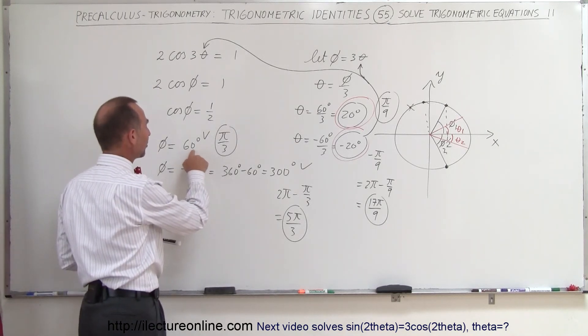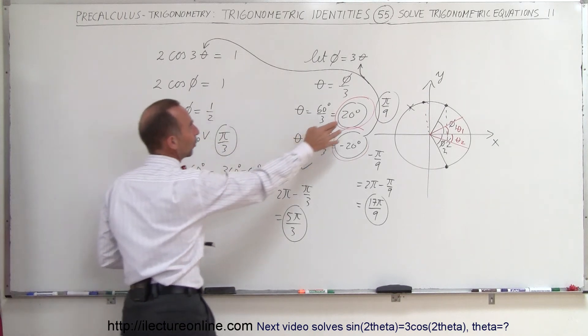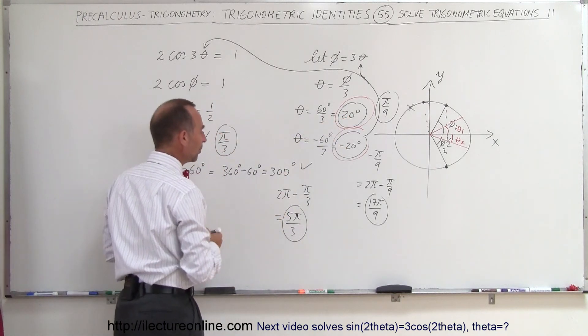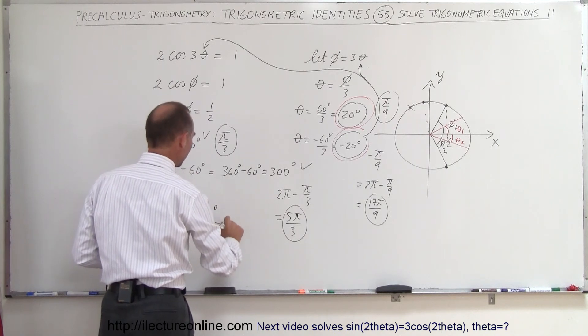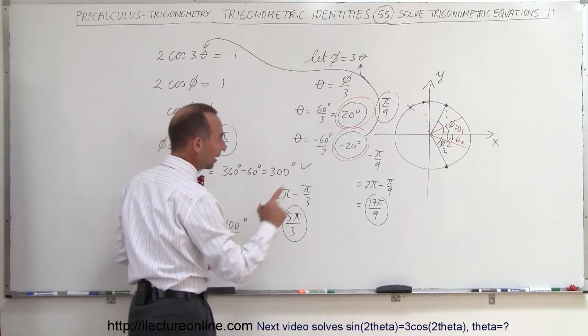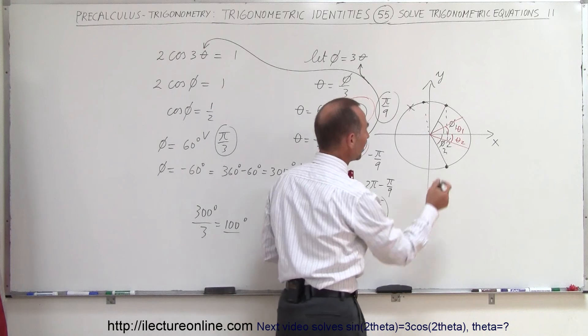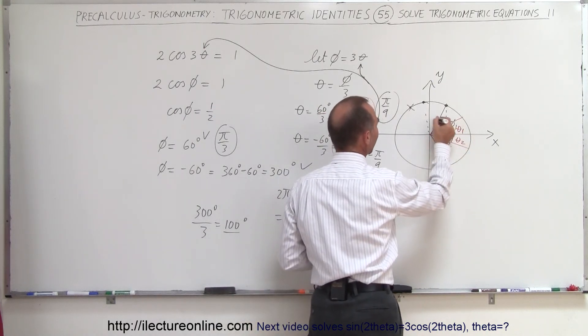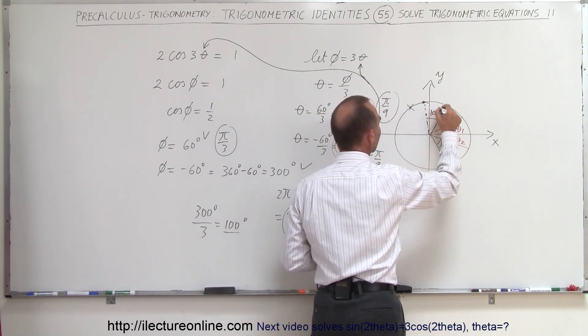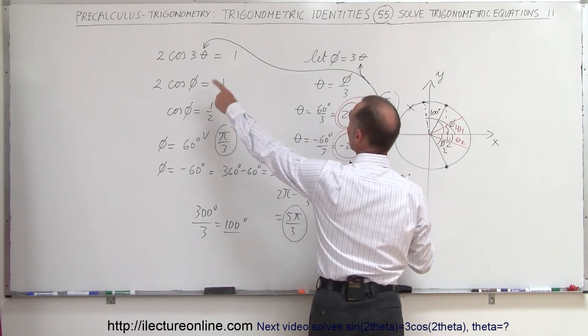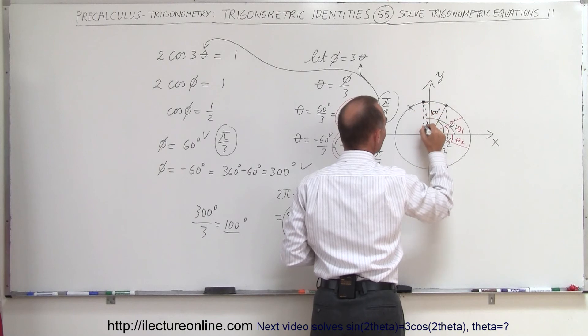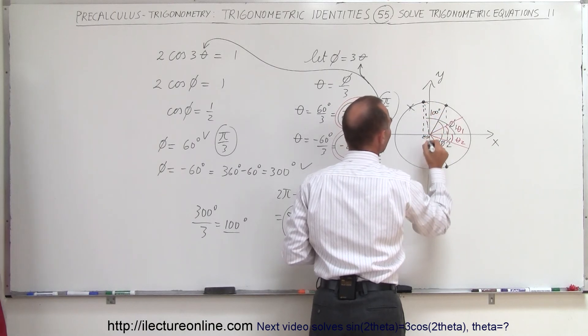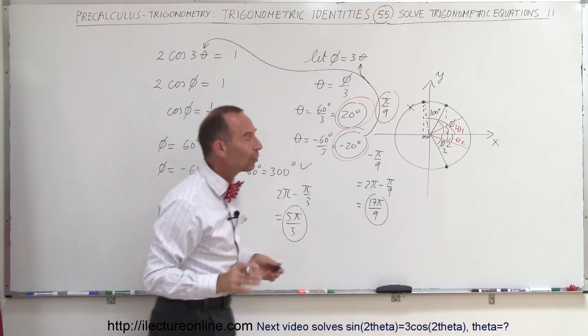For the first one, of course, you can. 60 degrees divided by 3 gives you 20 degrees, which is the correct answer. But if you take 300 degrees and you divide by 3, you get 100 degrees. And if you go to the unit circle, 100 degrees is just past the 90. That would be this angle right here. That's 100 degree angle. And we're looking for the cosine of that angle, which gives you this value right here, which is not equal to 1 half. So, that cannot give you the right answer.